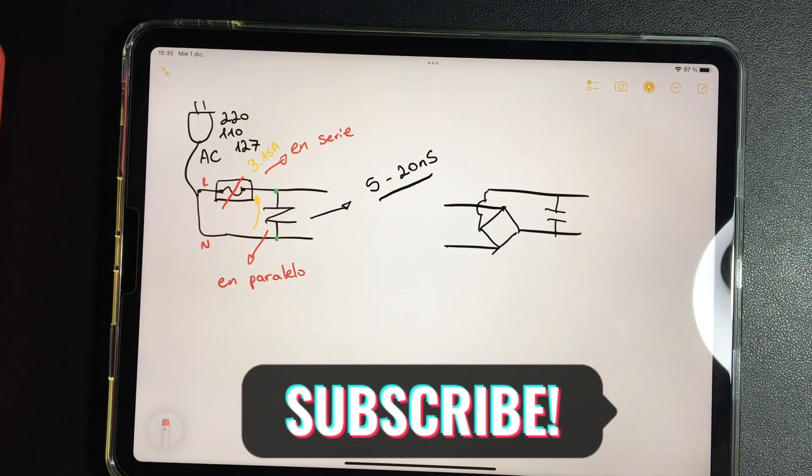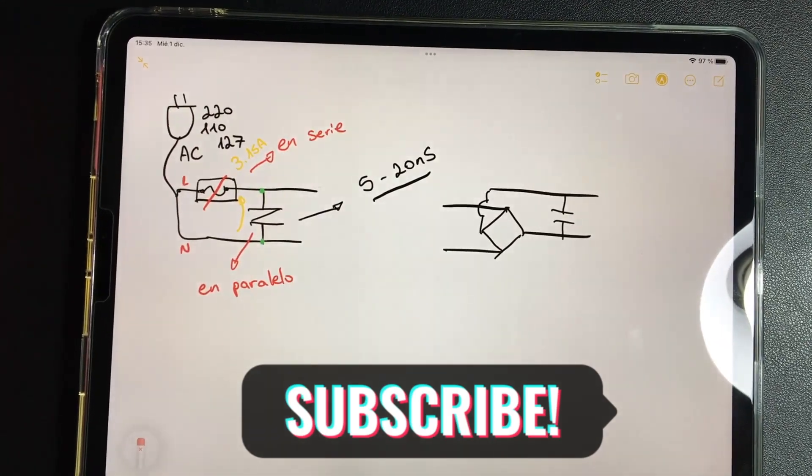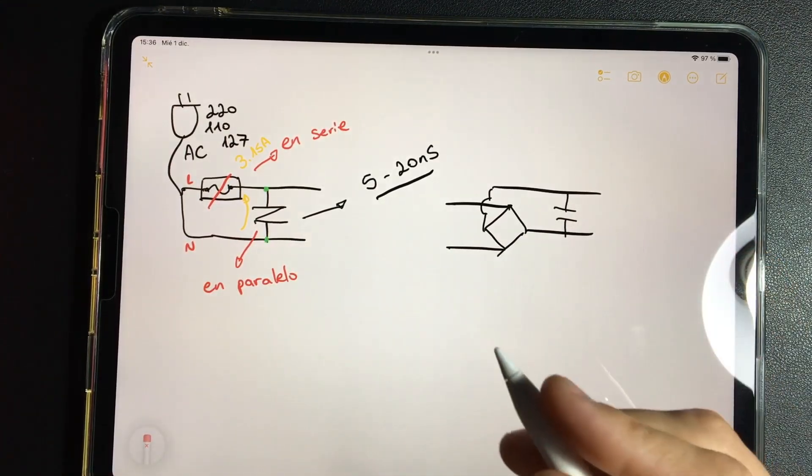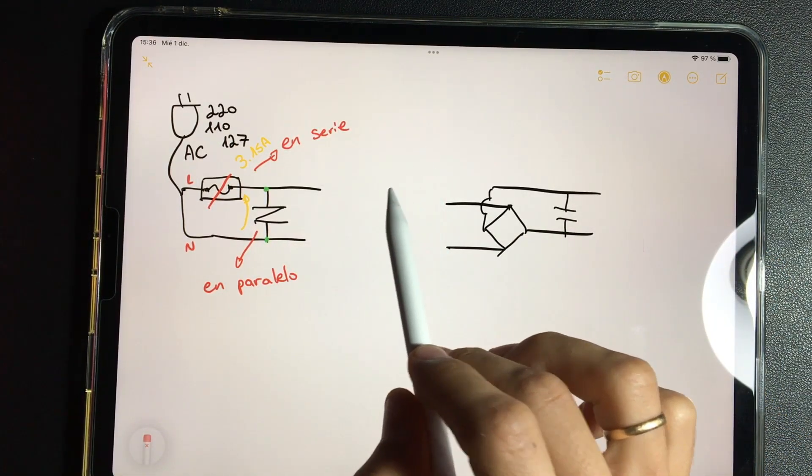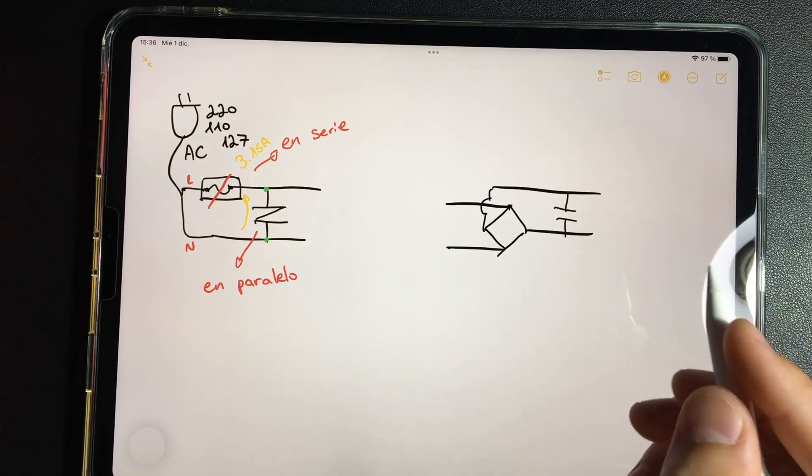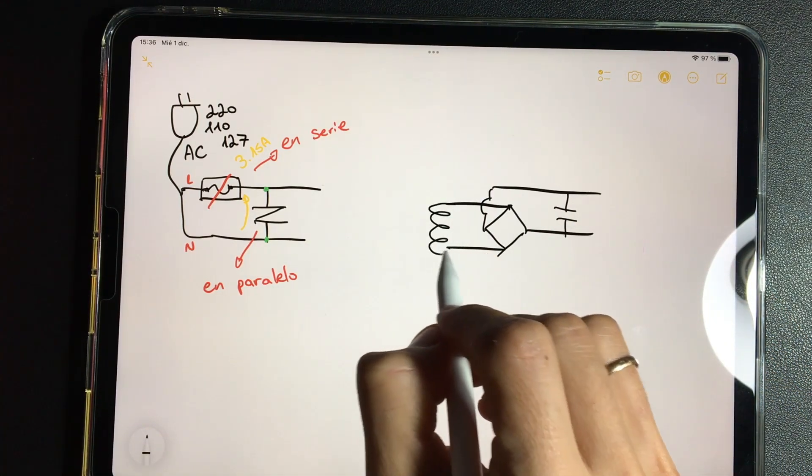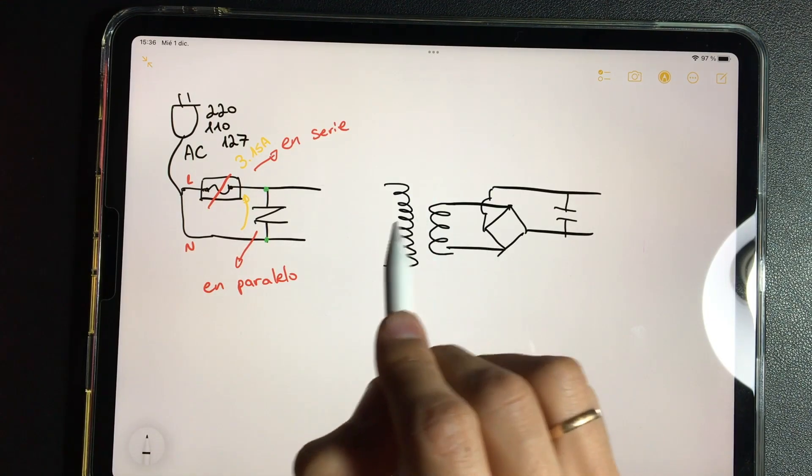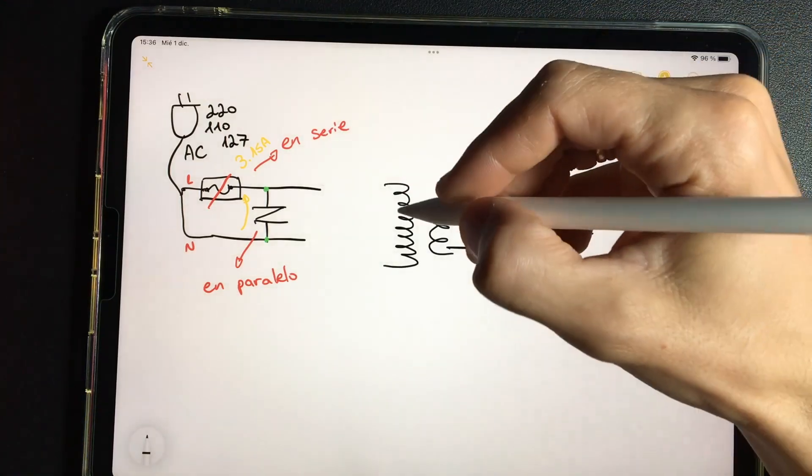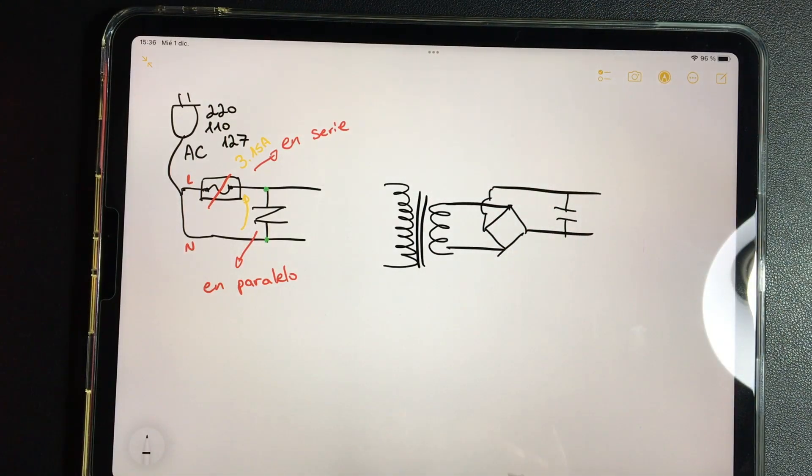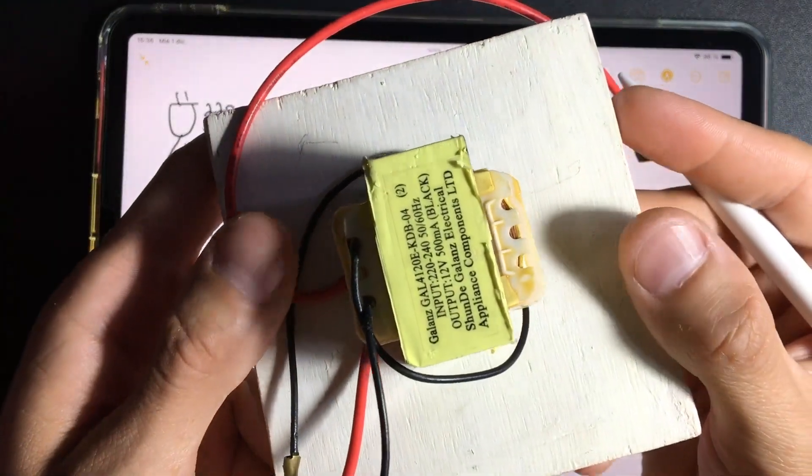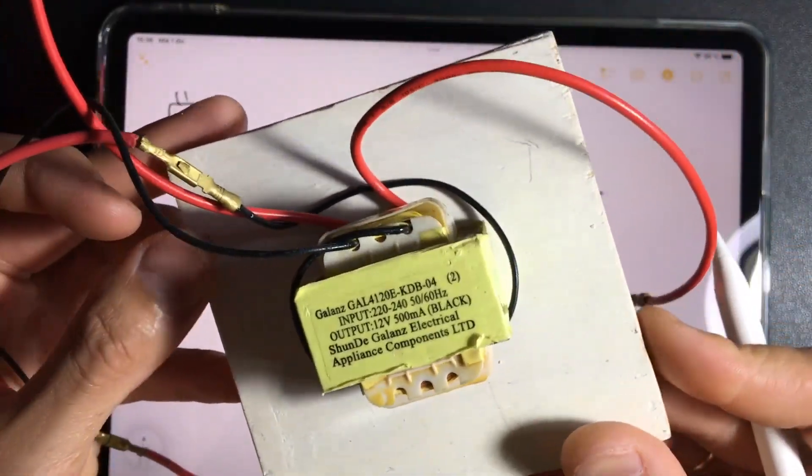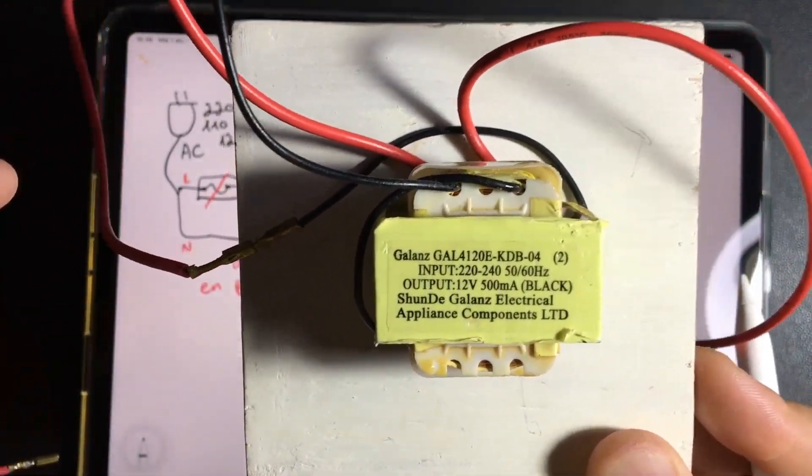We are going to continue advancing and explain another component that you will also find in the source area. We are going to locate it in this area and draw it here. This component is the transformer. Its function is to reduce the voltage. In order to work it needs to have alternating current.